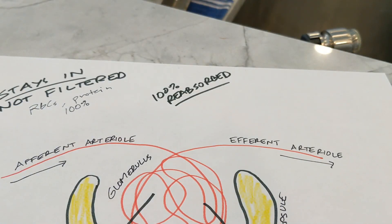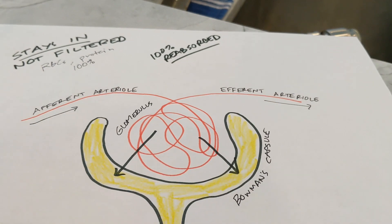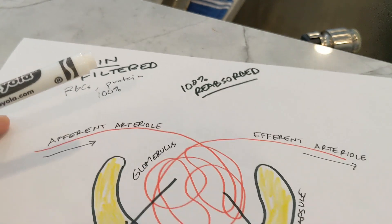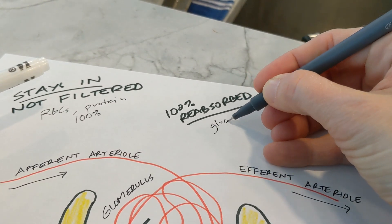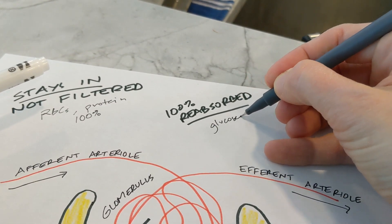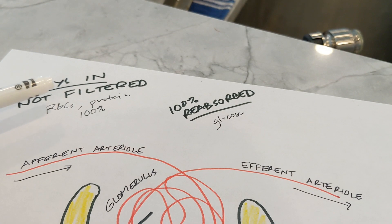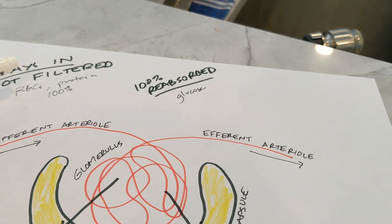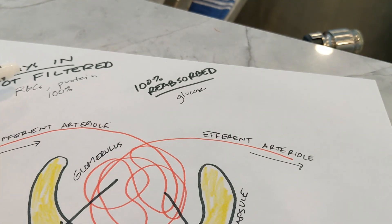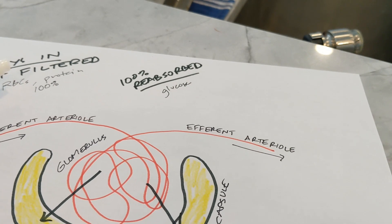There's another thing that should be completely reabsorbed. It does get filtered out and goes into the filtrate, but then we reabsorb every bit of it because it is precious — and that is glucose. You should not have sugar coming out in your urine. If you do, it's a sign of diabetes or kidney failure, because our bodies consider glucose to be a precious resource, so it should stay in our blood and gets reabsorbed completely.